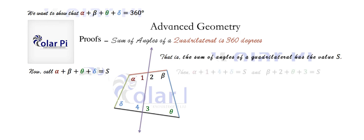Then by that logic, alpha plus one plus four plus delta is S. And for exactly the same reason, beta plus two plus theta plus three is also S. Because right here, we have a quadrilateral within our original quadrilateral. And we also have a quadrilateral right here within our original quadrilateral.